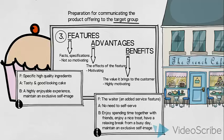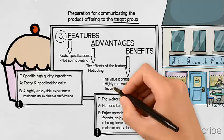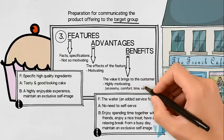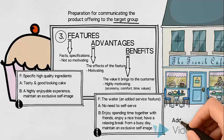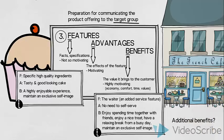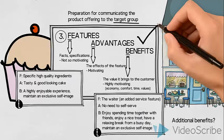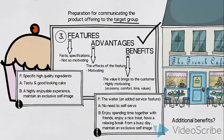So, benefits are what gives the customer value. And therefore, they are often described in terms of economy, time, comfort or values. In our example, comfort and values are the benefits. These values and benefits should be communicated to the target group in our mix of promotional activities. We could prepare many more benefits for communication, so pause the video for a minute and see if you can identify some additional features and translate them into advantages and most importantly benefits for our chosen target group.